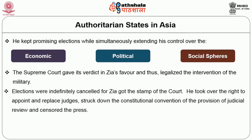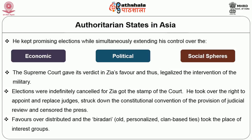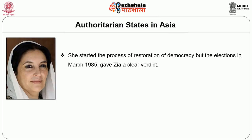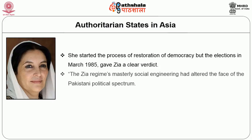Elections were indefinitely cancelled once Zia got the stamp of the court. He took over the right to appoint and replace judges, struck down constitutional provisions of judicial review, and censored the press. Favours were distributed and the biradari system was entrenched. Benazir Bhutto, daughter of Zulfikar Ali Bhutto, started the process of restoration of democracy, but the elections in March 1985 gave Zia a clear verdict. The Zia regime's social engineering had altered the face of Pakistan's political spectrum.